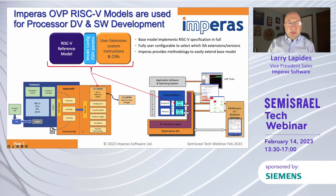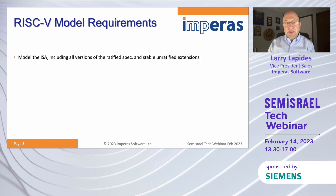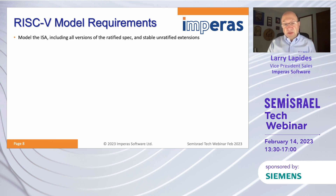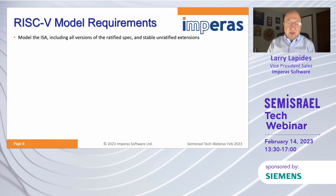Let's talk about the model requirements. We need to model the complete instruction set architecture, including all versions of the ratified spec and all stable unratified extensions. Right now, for example, we model four different versions of the vector specification because it has been stable at those four points, and we have had customers that implemented the vector spec at all those stable versions, as well as stable unratified extensions like vector crypto.